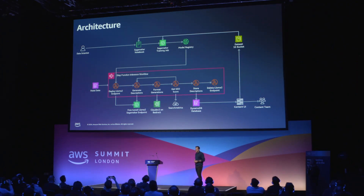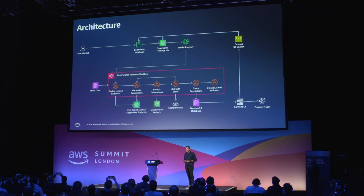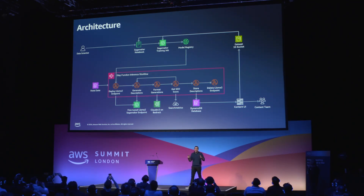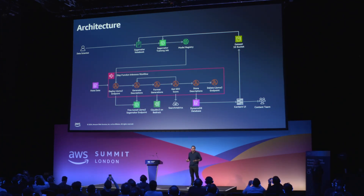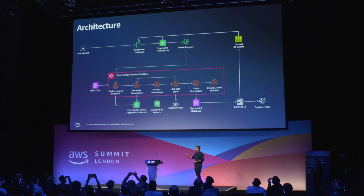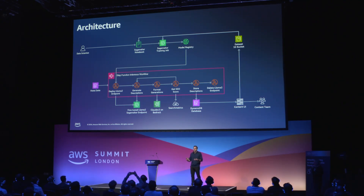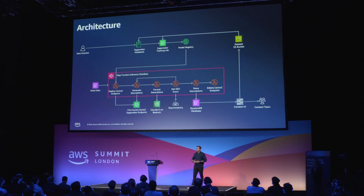This is our architecture diagram — it wouldn't be a technical session without it. It looks really similar to any MLOps pipeline you have seen before. The difference is that instead of a traditional machine learning model, we have a large language model. We have our SageMaker training job that we use to train and fine-tune our LLaMA 2 model, and we store that to the model registry.